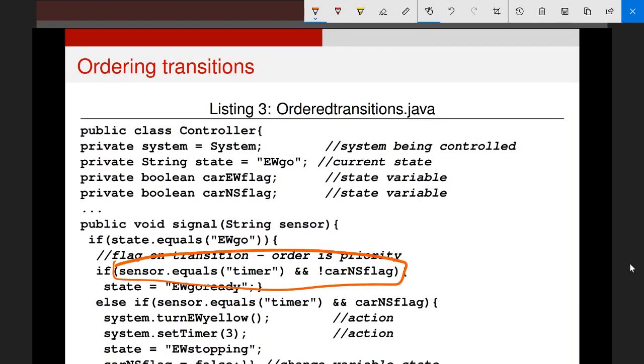So we can see our first if statement up here checks what state we're in. Then this one checks if our sensor, our timer has triggered, and the car north-south flag is not true, or if this timer has triggered and the car north-south flag is true.